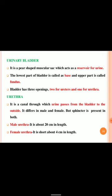The urethra is a canal through which urine passes from the bladder to the outside. It differs in male and female, but a sphincter is present in both. The male urethra is about 20 cm in length, while the female urethra is short, about 4 cm in length. The actual excretion of urine occurs through the urethra.